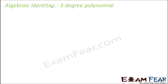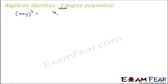So till now we have seen two degree polynomials. Let's see a three degree polynomial. Let's try to expand (x + y) to the power three. This is a three degree polynomial, which I can write as (x + y) into (x + y) whole square.